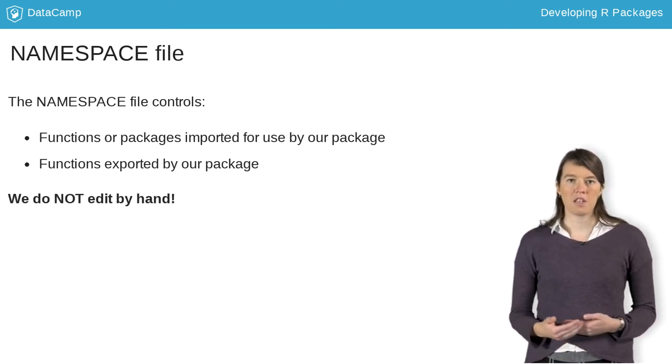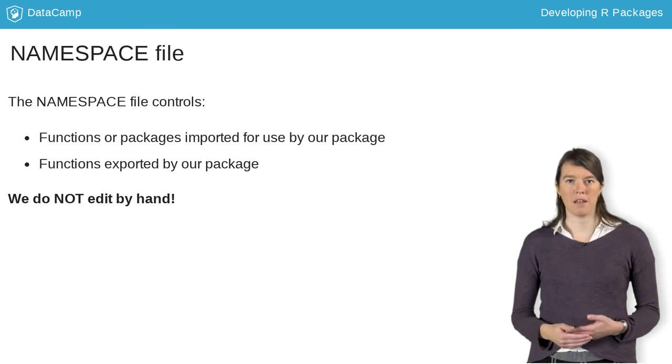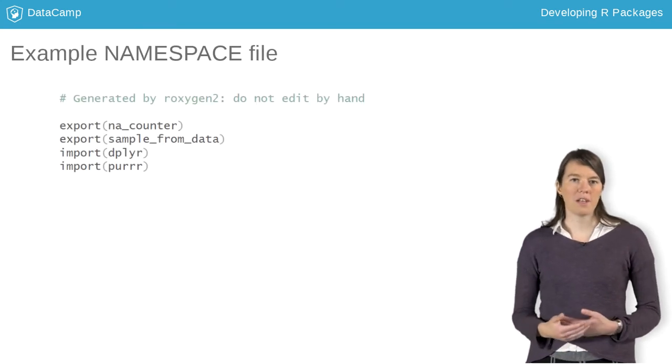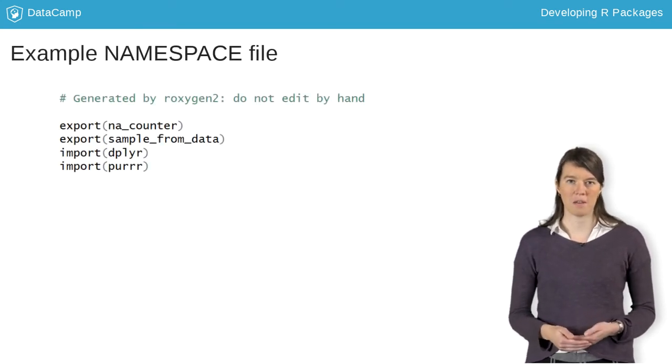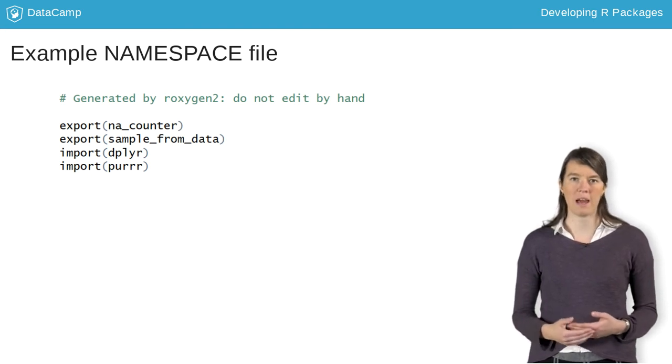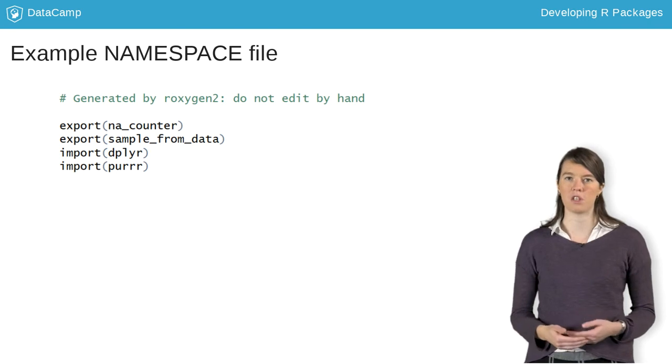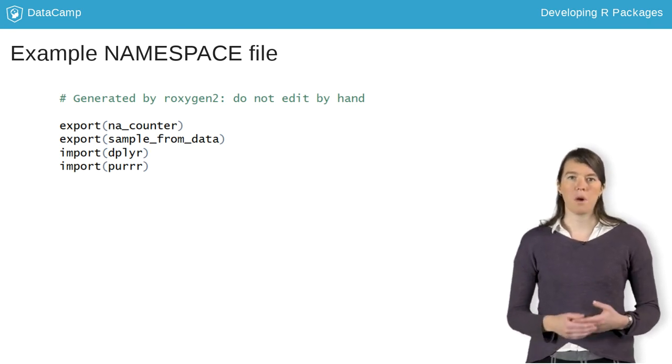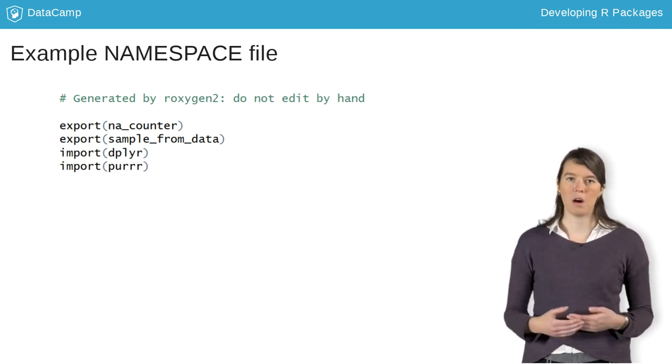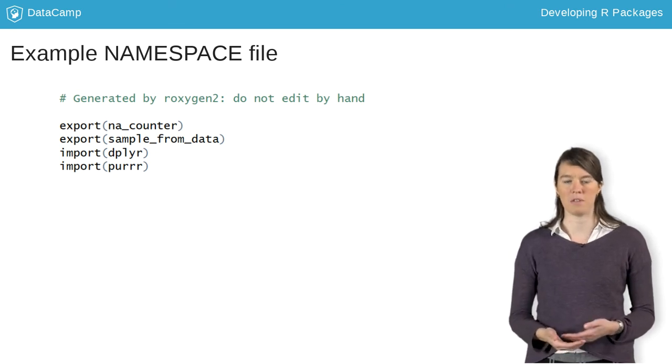For now let's just take a quick look at what a complete namespace might look like. This file always contains a reminder to us not to edit it, but otherwise you can see that in this package you are importing, or making available to your package, the functions from dplyr. From your package you are exporting, or making available to the package users, naCounter.